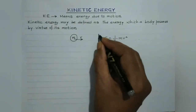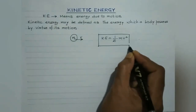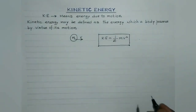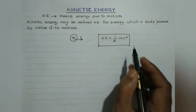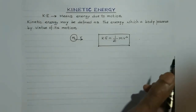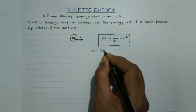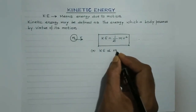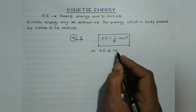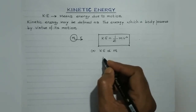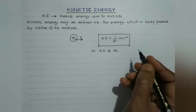This moving body will possess kinetic energy, and mathematically the kinetic energy of a body is given by ½mv². Here m is the mass of the body and v is the velocity with which the body is moving. Kinetic energy is directly proportional to mass — the more the mass, the more the kinetic energy. For example, a railway engine has more kinetic energy than a car when both move with the same velocity.